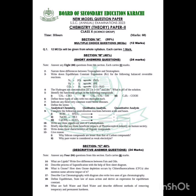Section B will be 40% marks — short question answers worth 24 marks. Question number 2 to question number 13 is your Section B. You have to attempt any 8 questions from this section, and each question carries 3 marks.